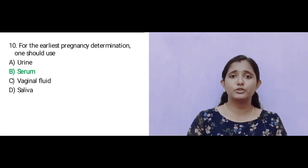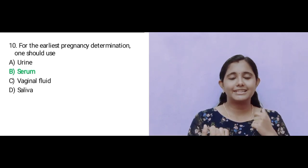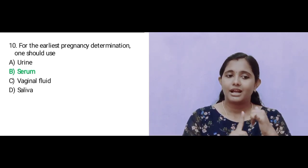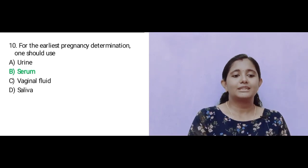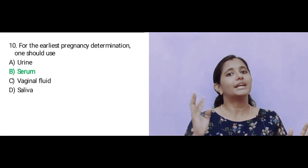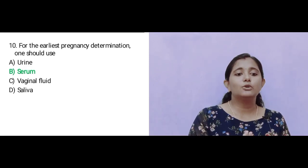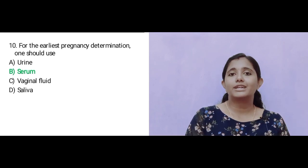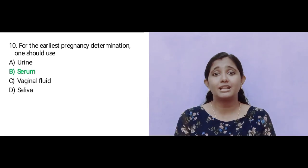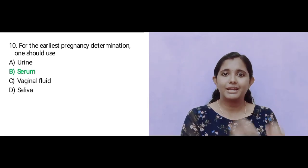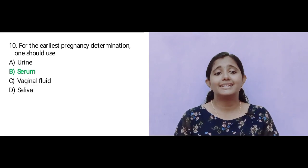The answer is Option B: serum. Blood can detect hCG approximately 7 days earlier than urine — about 7 days after conception, compared to around 14 days for urine. Vaginal fluid and saliva are not used. That concludes all ten questions. Thank you all, I'll see you later.